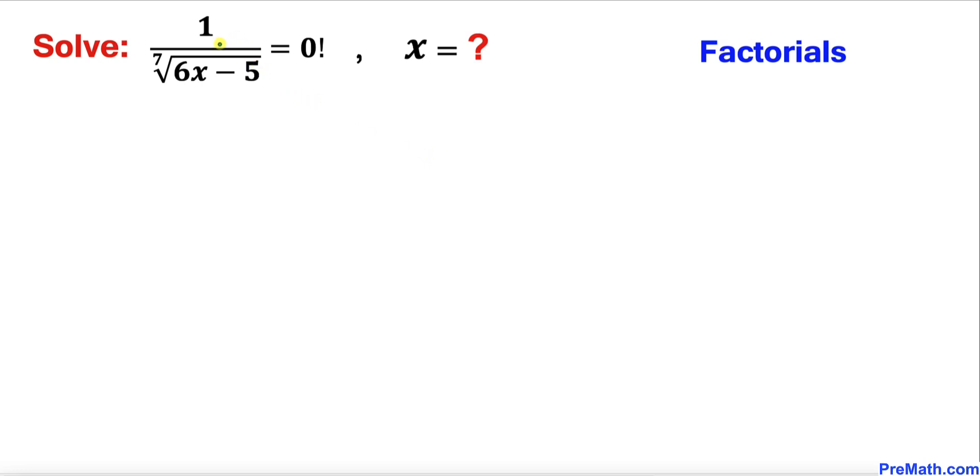Welcome to PreMath. In this video we are going to solve this given equation: 1 divided by 7th root of 6x minus 5 equals to 0 factorial. Please don't forget to give a thumbs up and subscribe.